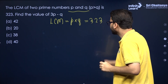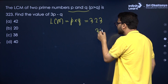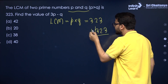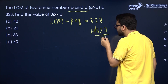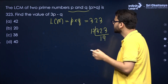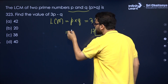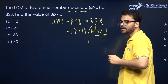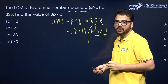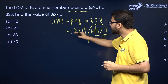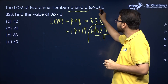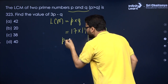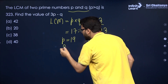Now if you do the prime factorization of 323, the prime factorization gives 17 into 19. So we can say that P into Q is equal to 17 into 19. It is given that P is greater than Q, so there is no other possibility but to take P equal to 19 and Q equal to 17.